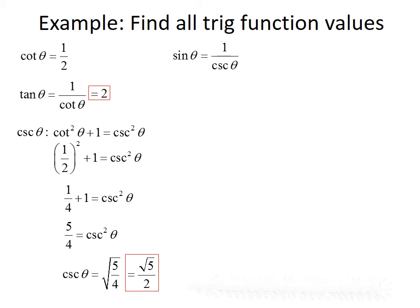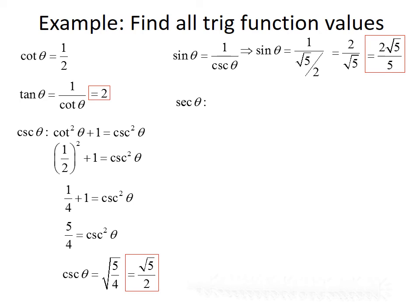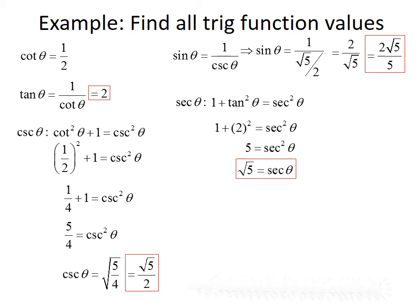Now that we know cosecant of theta, we can find sine of theta using the reciprocal property. Sine is the reciprocal of cosecant, so sine of theta equals 1 over (root 5 over 2), which gives 2 over root 5. Rationalizing gives 2 root 5 over 5. Next, we find secant using the Pythagorean identity: 1 plus tangent squared equals secant squared. Plugging in 2 for tangent: 1 plus 4 equals secant squared, so secant squared equals 5, and secant of theta equals root 5. Finally, cosine of theta is the reciprocal of secant, so cosine equals 1 over root 5. Rationalizing gives root 5 over 5.